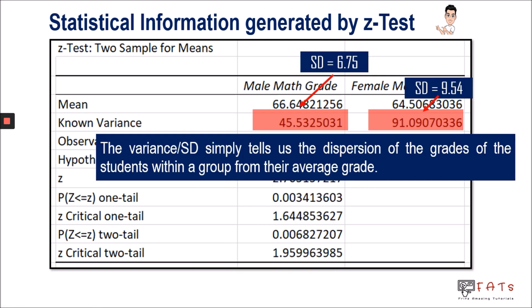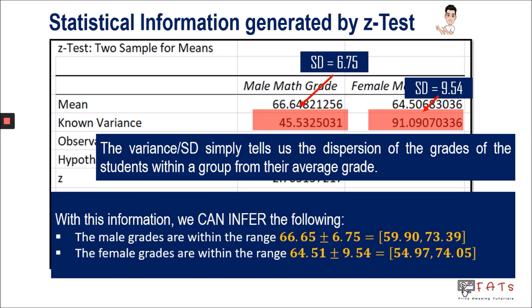The standard deviation simply tells us the dispersion of the grades of the students within a group from their average grade. In this example, we can say that the math grades of the male students are closer to each other compared to the math grades of the female students. Furthermore, we can infer that the male grades are within the range 59.90 to 73.39, and similarly the grades of the female are within the range 54.97 to 74.05.